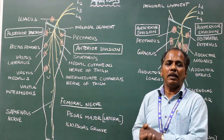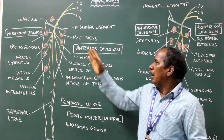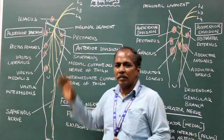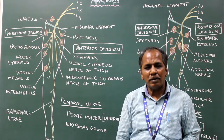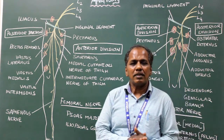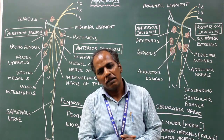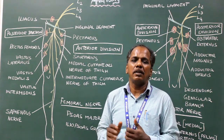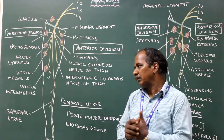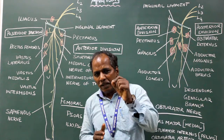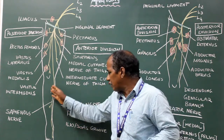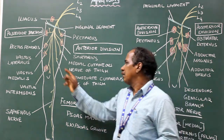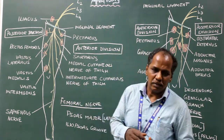Applied anatomy: injury to the femoral nerve results in paralysis of the anterior compartment muscles of the thigh, which are powerful extensors, so loss of extension of the knee joint occurs. There is also sensory loss over the medial side of the leg and the medial border of the foot, due to injury to the saphenous nerve.